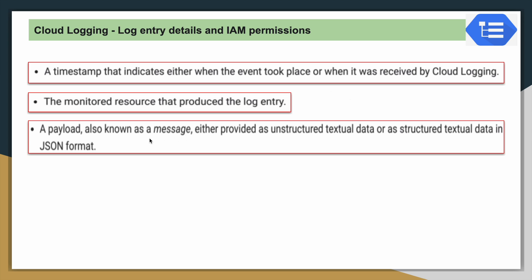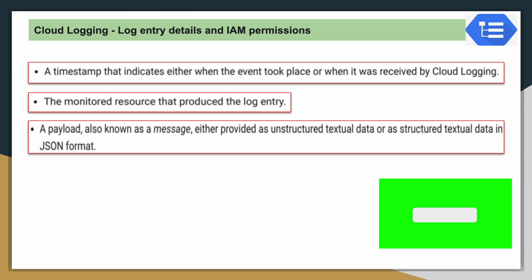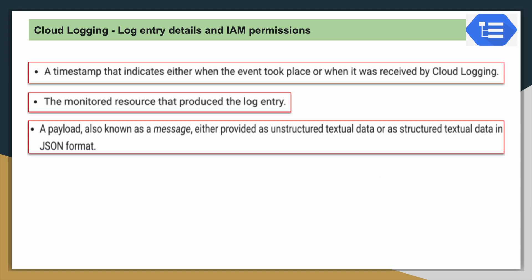Then we have detailed information called a payload or message. This is completely based upon the resource to which this particular log belongs. For example, if it is related to BigQuery, we have every detail about what job was submitted, from where it was triggered — all that in-detail information is inside this payload. Basically this log is available in JSON format — it is a very lengthy JSON file for a single log entry.